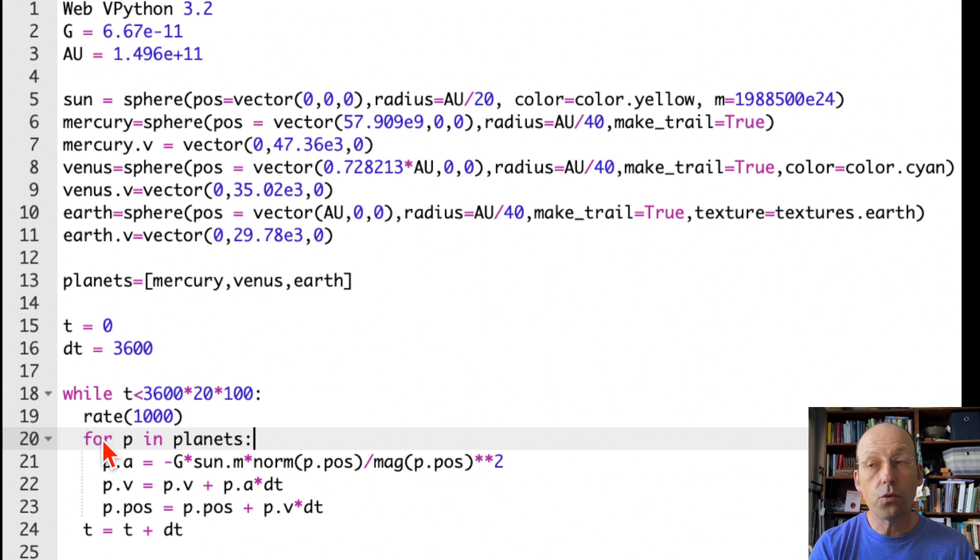So, this line 20 says for p in planets. So, this goes through the list planets. And it calls each element p. So, it's going to start off with p is Mercury. And then p is Venus. And then p is Earth. And so, now I need to calculate the acceleration, update the velocity, update the position. I can do that with this loop. It just goes through that list and does the same thing. p.a. It calculates acceleration based on the position right there. And then it updates the velocity. It updates the position. So, there you go. And then it does it for the next side of the list. So, I can have as many planets as I want in there. And I don't have to do all those update Mercury, update Venus, update Earth, update Mars. You can do that. But, this is just a little bit quicker.